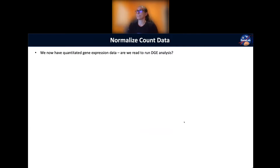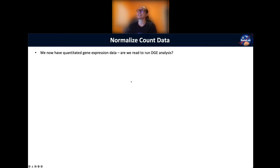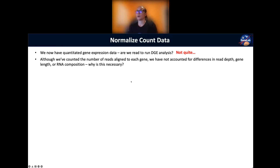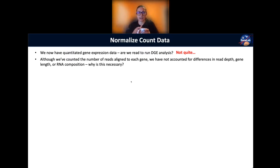Now that we have our raw counts table, our next step is going to be to normalize those counts. So we're posing the question: we now have annotated gene expression data — are we ready to run DGE analysis? Well, not quite. As many of you pointed out throughout the bootcamp, although we counted the number of reads aligned to each gene, we have not yet accounted for differences in read depth, gene length, or RNA composition.